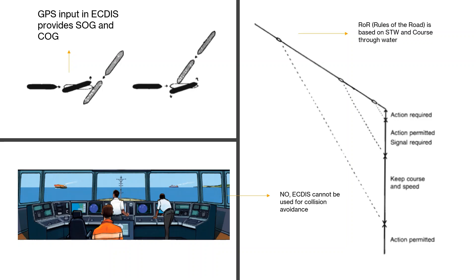However, when it comes to the ECDIS, the ECDIS is receiving inputs from the GPS. It is of course a position input, but it is also an input of the speed over ground and course over ground. So you have to remember that GPS provides input—the speed and the course—that is speed over ground and course over ground, not speed through water and course through water. And that is why the ECDIS cannot be used for collision avoidance.